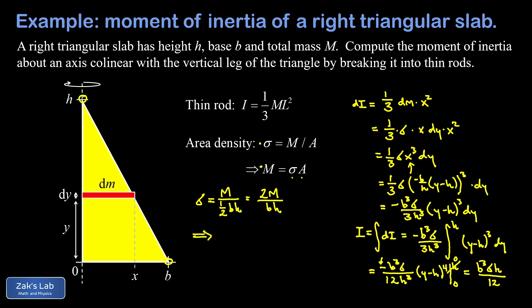Now we sub in 2M over bh in our result for the moment of inertia, and I have b cubed times 2M times h over 12 bh. So the h's are going to cancel out there, one factor of two is going to cancel leaving us with a six in the denominator, and a b is going to cancel out leaving us with a b squared in the numerator.